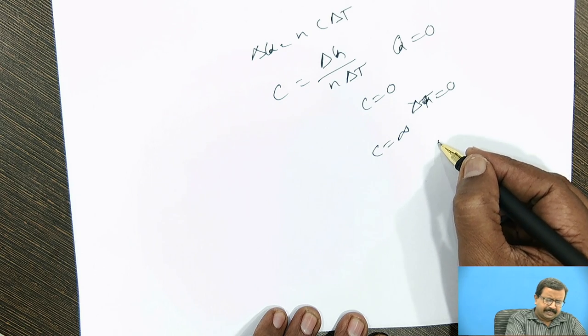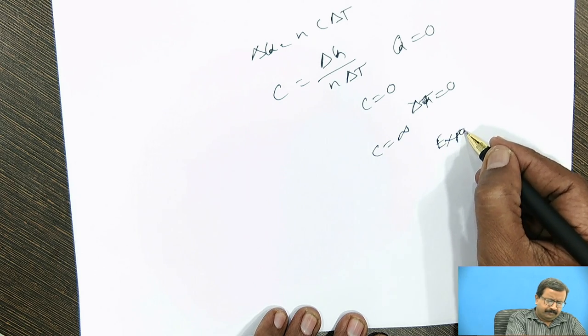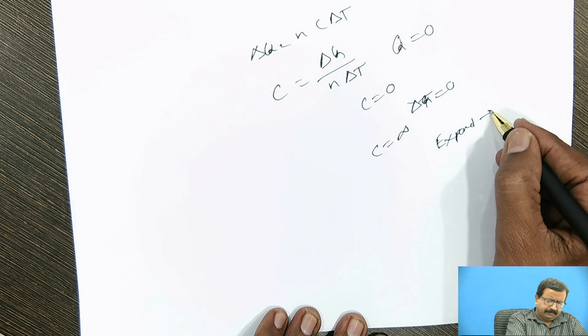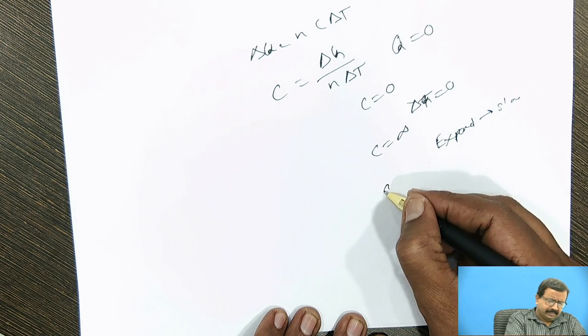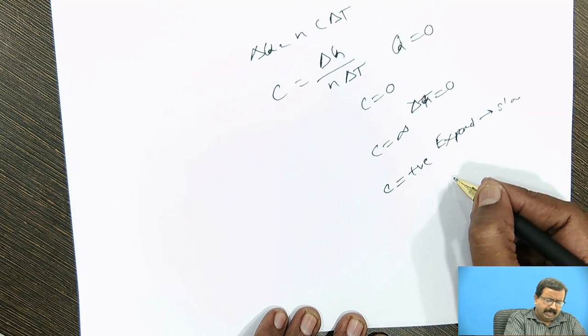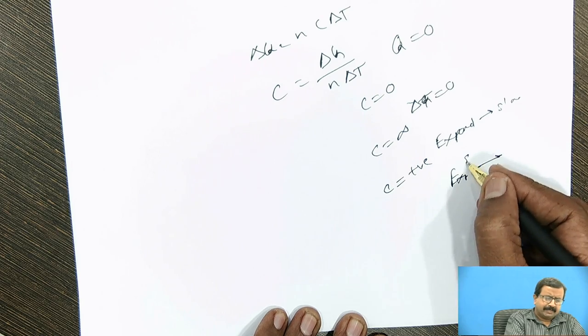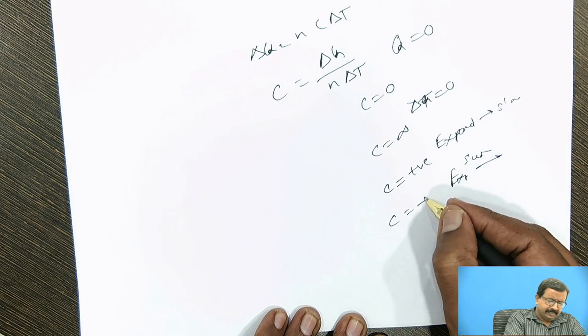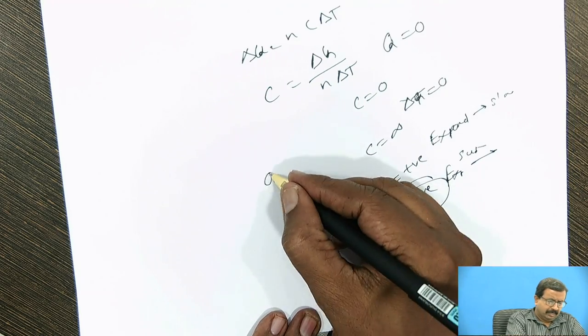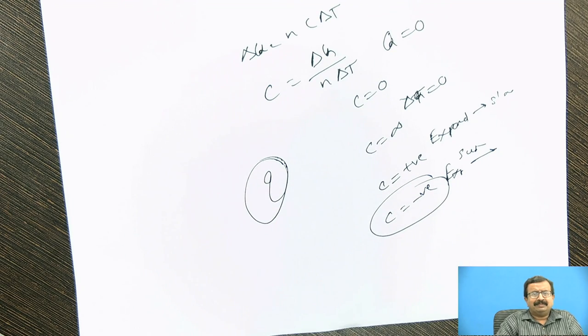Then if I expand slowly, C is positive. And if I expand suddenly, C is negative. So you think over how can you imagine that specific heat can be negative.